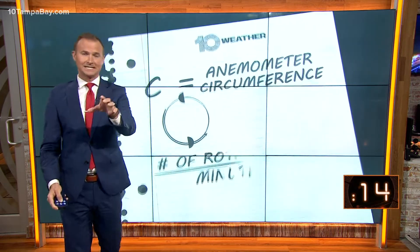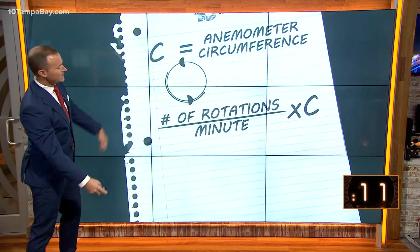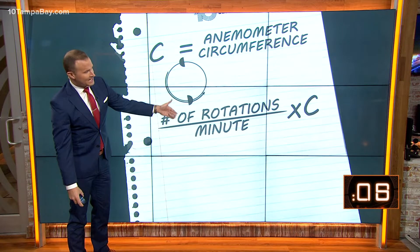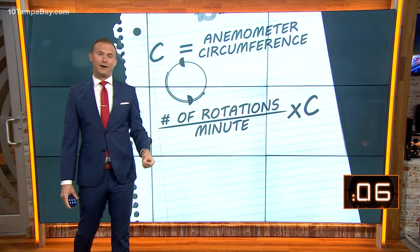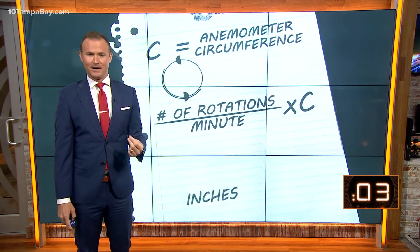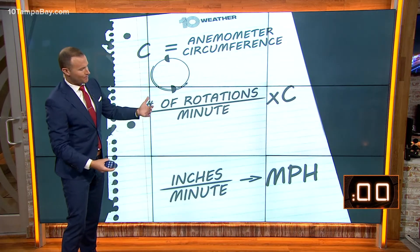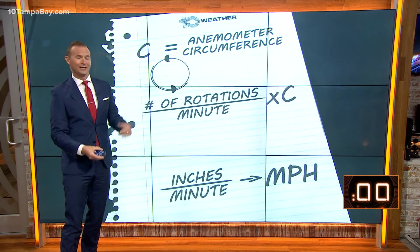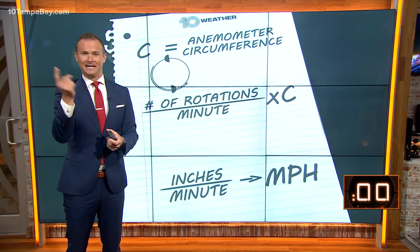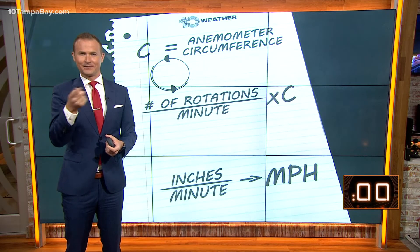You take C — the circumference — for example. A little math lesson here this morning: you take the number of rotations in a minute and you multiply that by the circumference of that anemometer. So that would give us inches per minute. It's a simple conversion to miles per hour, and that's how we're able to tell you what the wind speed is based on how many times that anemometer is spinning around.